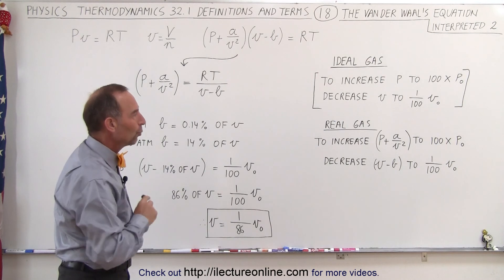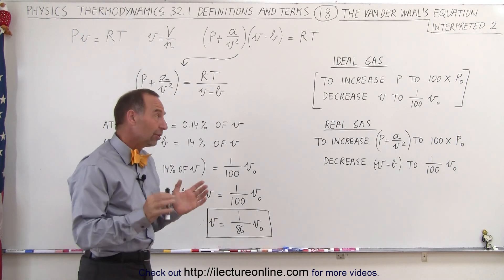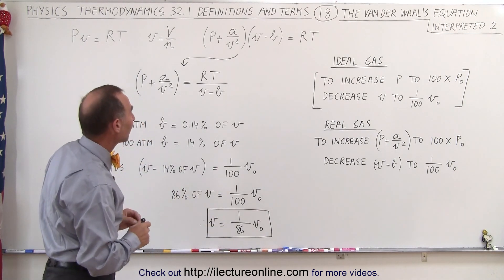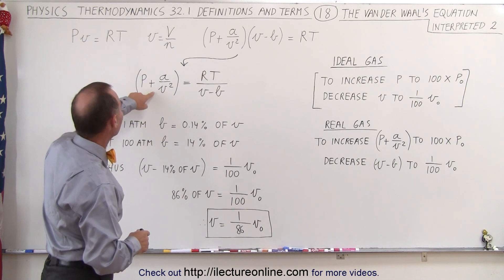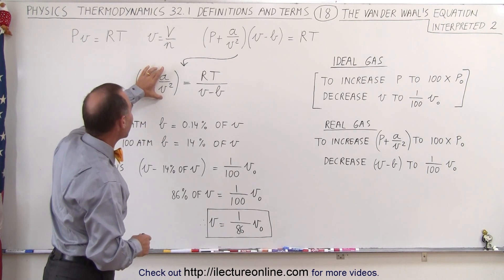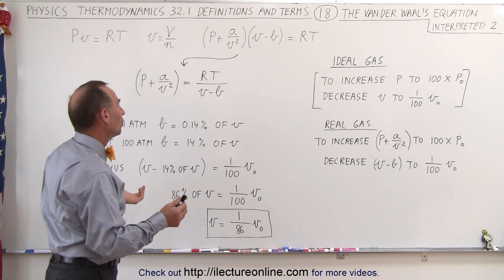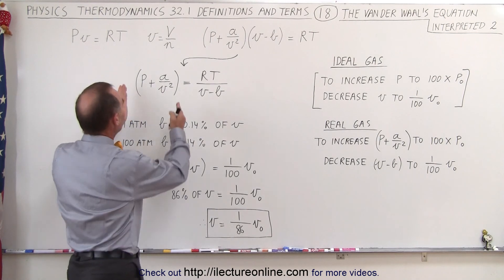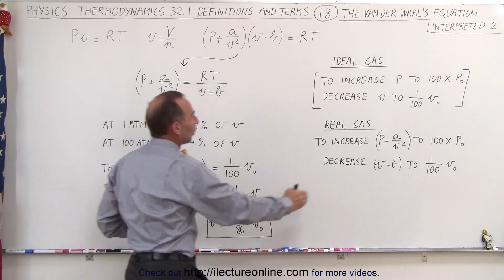And now when we go to real gas, what happens? Well, things are a little bit different now because instead of having just pressure, we now have P plus this additional term a divided by v squared. And so what we can say is, to increase this quantity to 100 times the original pressure...